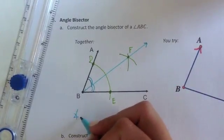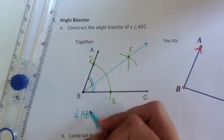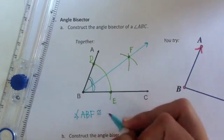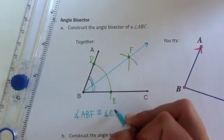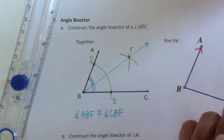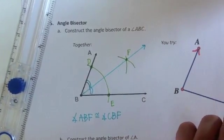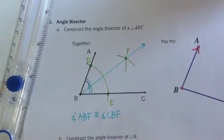And we'll write that out. Angle ABF is congruent to angle CBF. Because again, an angle bisector divides an angle into two congruent angles.